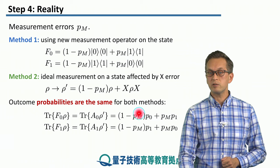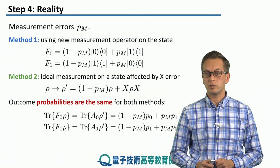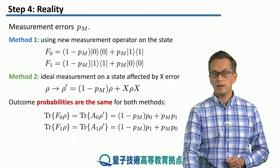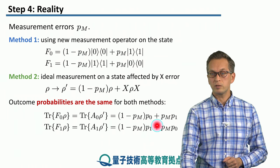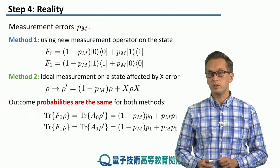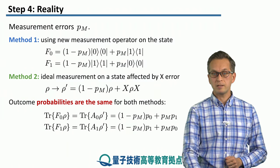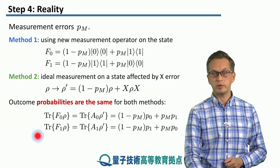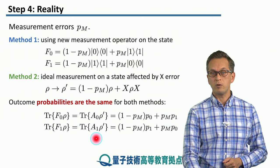And we also have some contribution from P1 due to non-vanishing probability error PM. And similarly for our outcome of one, which is given by this expression below F1 or A1.